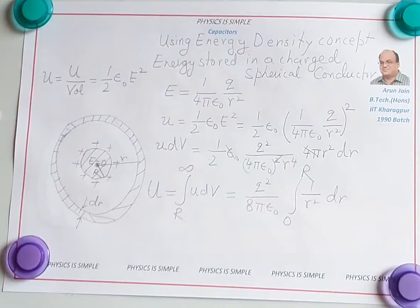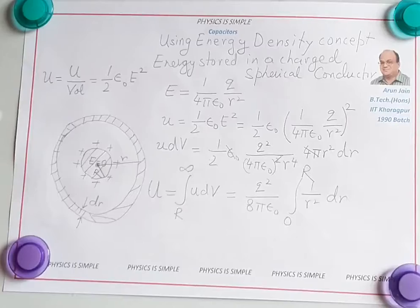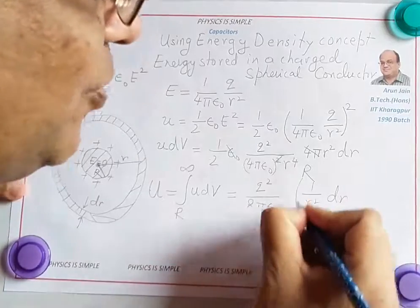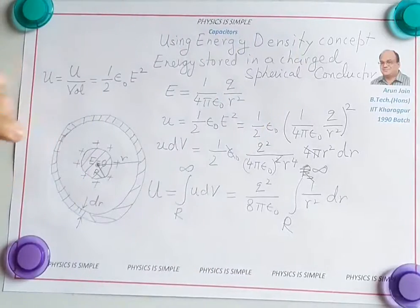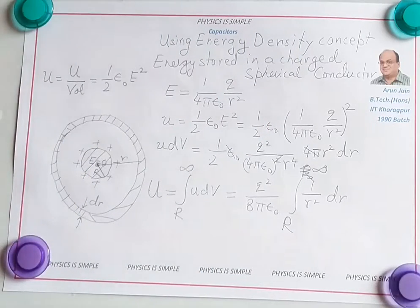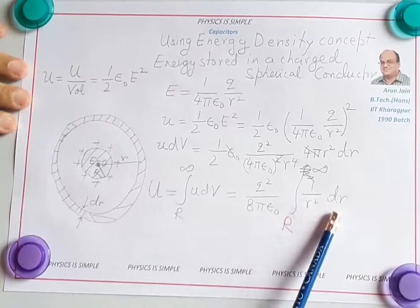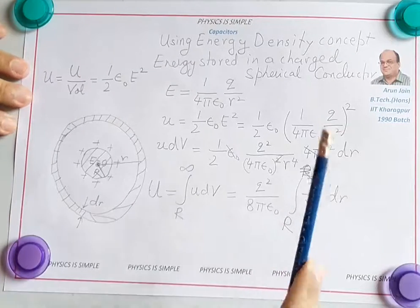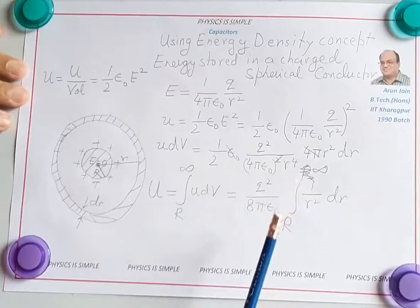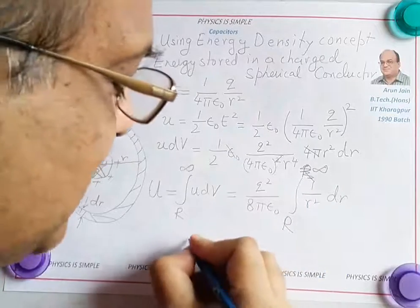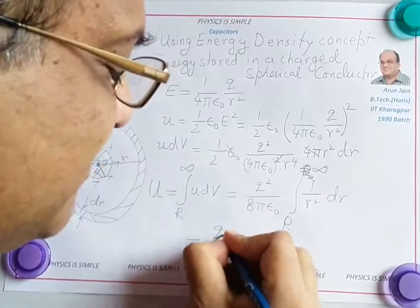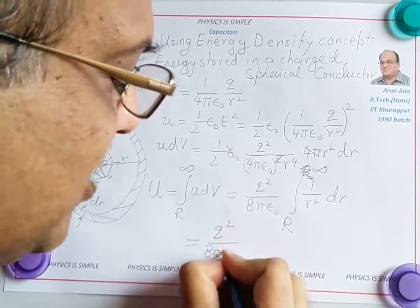When we integrate 1 over r squared dr, we get minus 1 over r. This integration is from R to infinity because the electric field extends from the surface to infinity. Applying the limits: the upper limit gives 0, and the lower limit gives 1 over R.